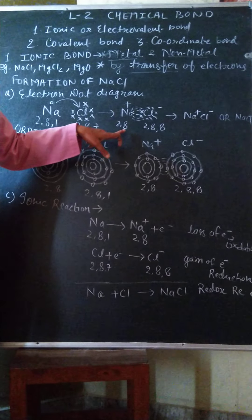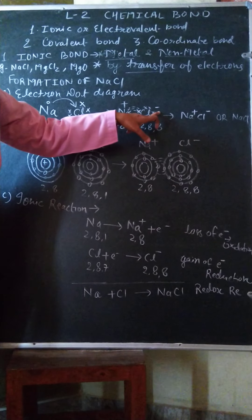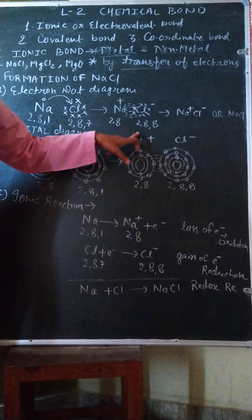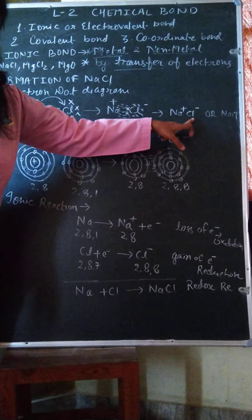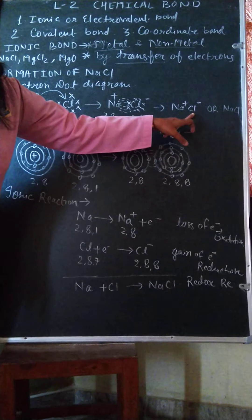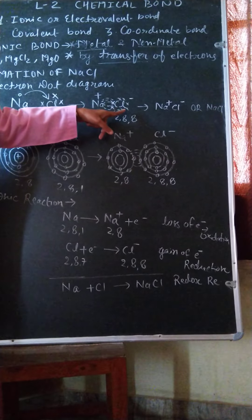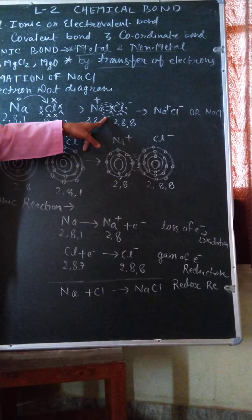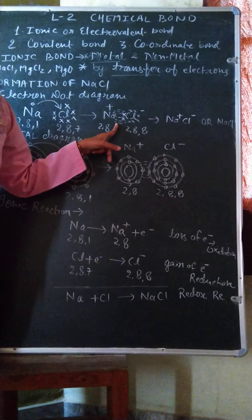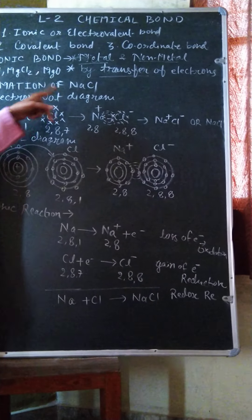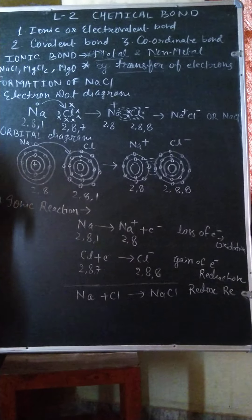The configuration of Na⁺ is 2-8 after transfer of electrons, and Cl⁻ (chloride ion) has a configuration of 2-8-8. In this way, Na⁺ cations and Cl⁻ anions are formed, and the sodium cations and chloride anions are held together by a strong force of attraction that is called ionic bond. This completes the electron dot diagram for the formation of NaCl.